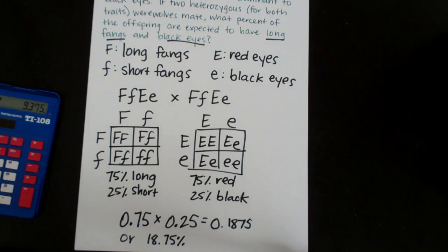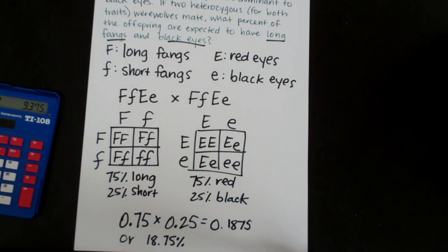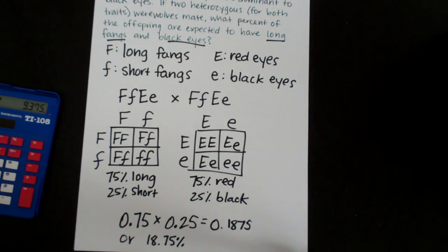So again that's a dihybrid cross. It's a lot easier when you just use two Punnett squares instead of one of those gigantic Punnett squares.